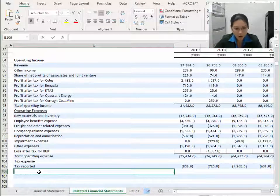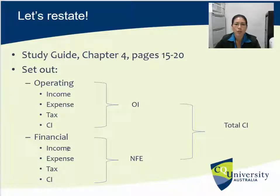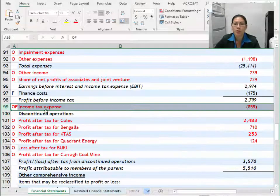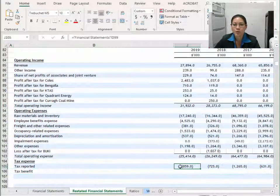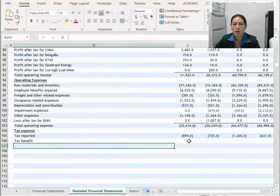My tax expense is a negative figure, which means that's the tax Wesfarmers has paid — that's why I'm calling it tax expense. If your figure here is positive, that means your company is getting a tax benefit or refund, so change the heading to tax benefit. I've dealt with this item so I'm going to highlight it. Underneath tax reported I'd like you to write tax benefit — or tax expense if you're in the opposite situation — because this is the amount attributable to the F section that I'll calculate and take away from the 100% of tax up here.